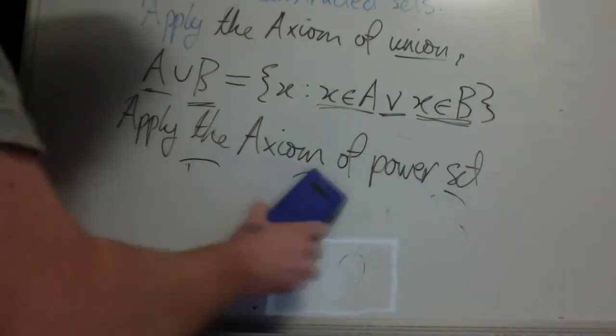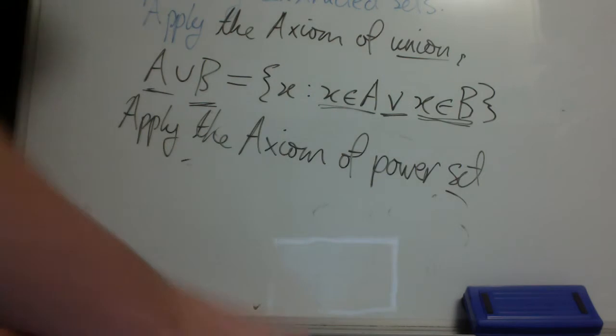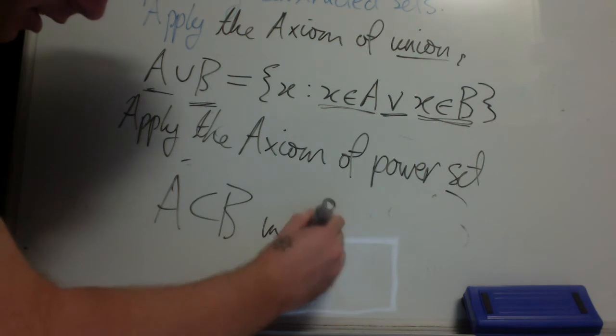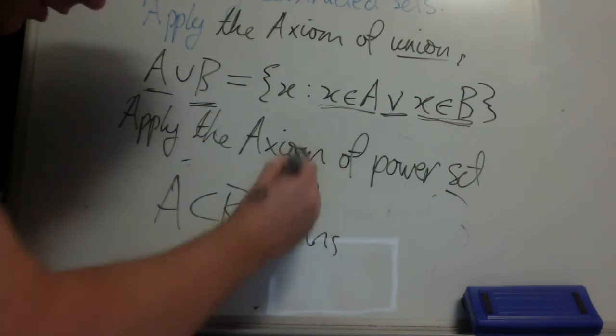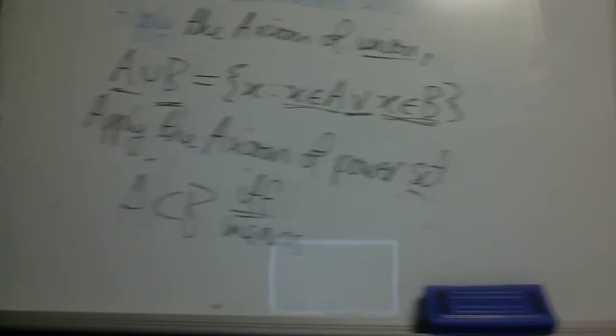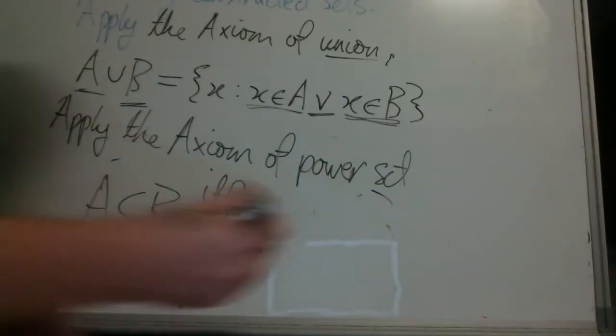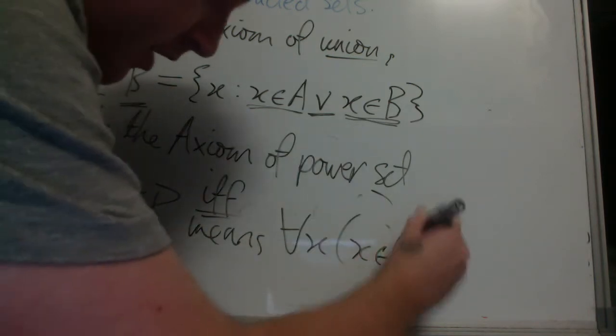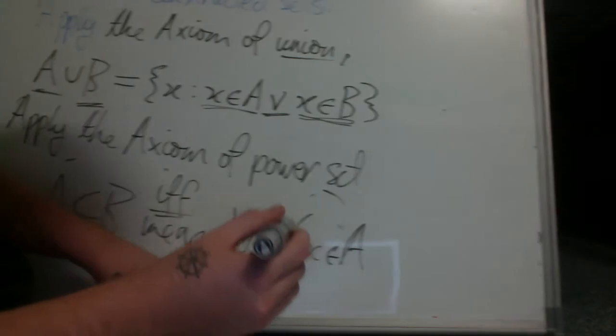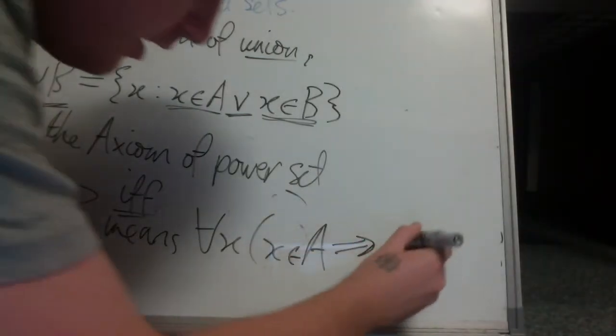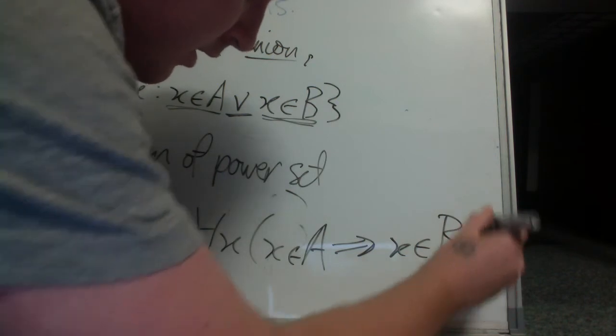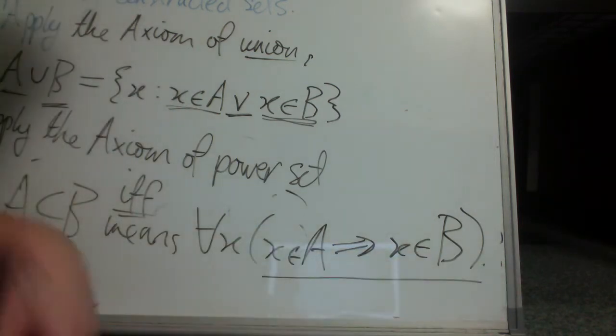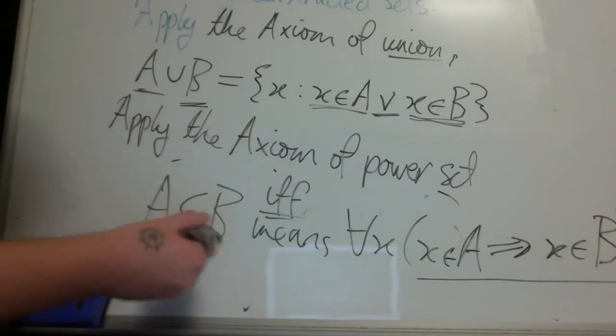So again, just to be clear, subset, so A is a subset of B means, if and only if, for all x, x element A implies x element B. So every element of A is an element of B.